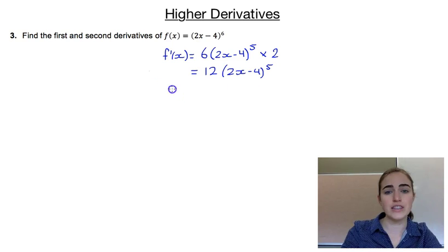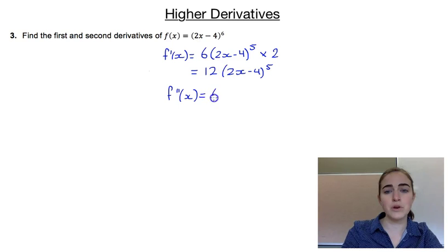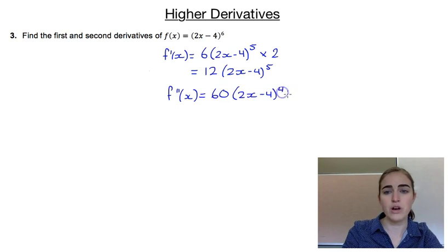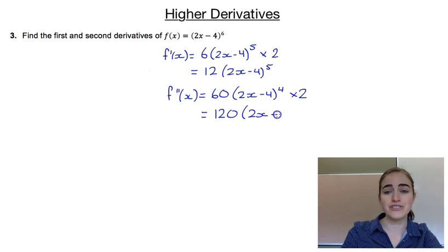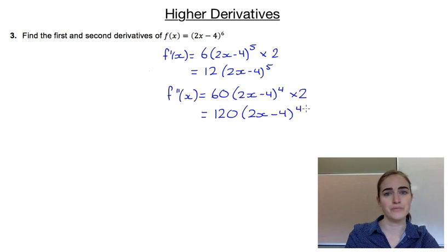Then we're going to differentiate this a second time. So we're going to have 5 times 12, so 60, leave the inside as it is to the power of 4, and then multiply by the derivative of the inside, which is 2. So we'd have 120 times 2x minus 4 to the power of 4. So that's having a look at some higher derivatives.